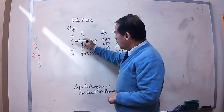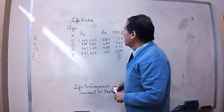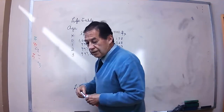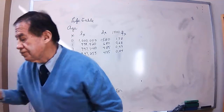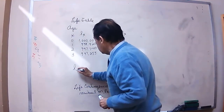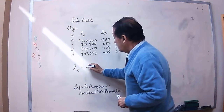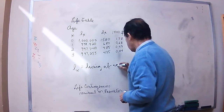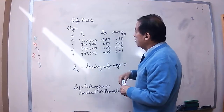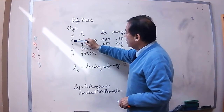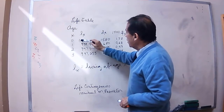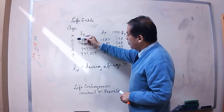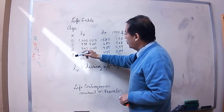In this case we have ages one, two, three, and four, for example. The L column corresponding to an age means 'living at age X.' For example, if I say how many persons are living at age zero, we have a million persons living at age zero. And the same thing applies to age one, age two, or age three.